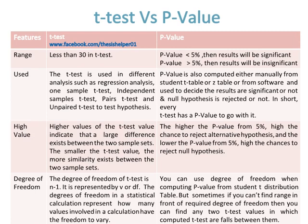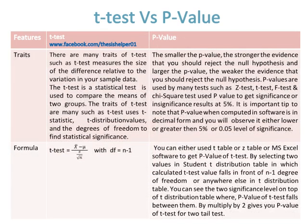Traits of the t-test include: the t-test measures the size of the difference relative to the variation in your sample data, and it is used to compare the means of two groups. The t-test uses t-statistic, t-distribution values, and degrees of freedom to find statistical significance. For p-value traits: the smaller the p-value, the stronger the evidence that you should reject the null hypothesis, and the larger the p-value, the weaker the evidence.